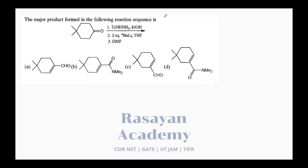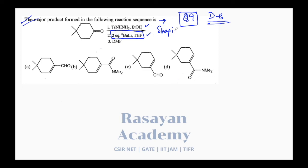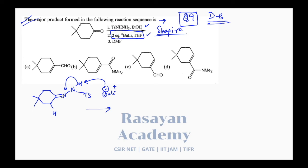Moving on to question number 9, December 2013. The major product formed in the following reaction sequence: step 1 is tosyl hydrazine in ethanol; step 2 is 2 equivalents of n-butyl lithium. With tosyl hydrazone and 2 equivalents of n-BuLi, this is the Shapiro reaction. Let's work through it: first, tosyl hydrazone forms; then the first equivalent of n-BuLi removes the more acidic proton from the nitrogen center.